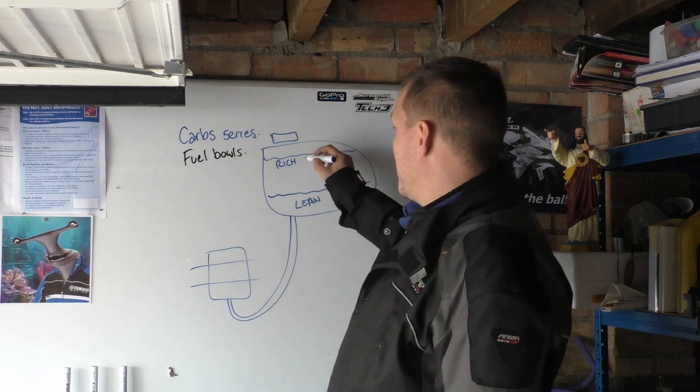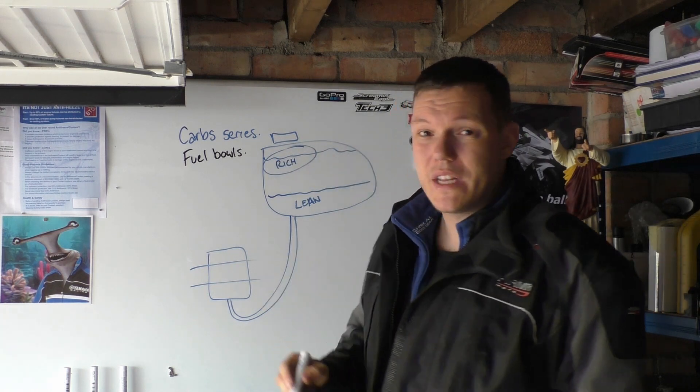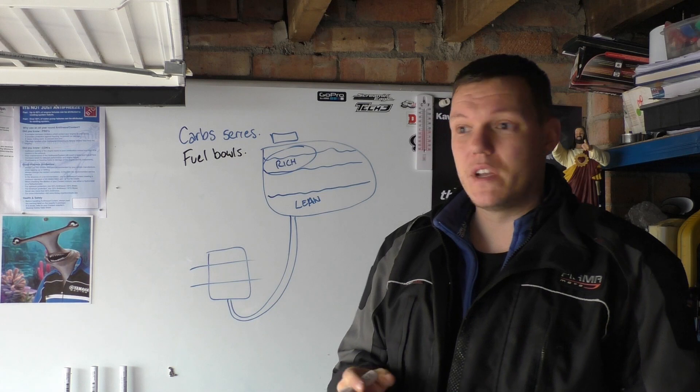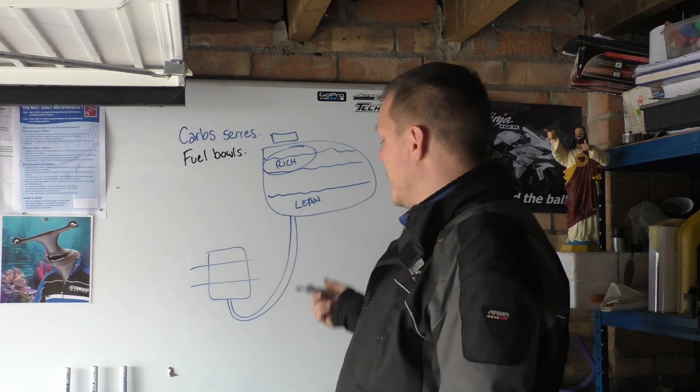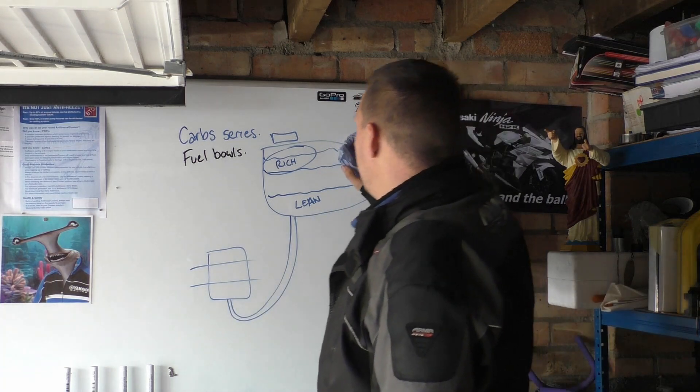And then when you're down here you would run lean. So the problem is you probably won't even start here, and if you did start here, if you could get it to run and it is running rich, you'd only have to eat a tiny bit of your tank before it'd lean out and then it'd stop.